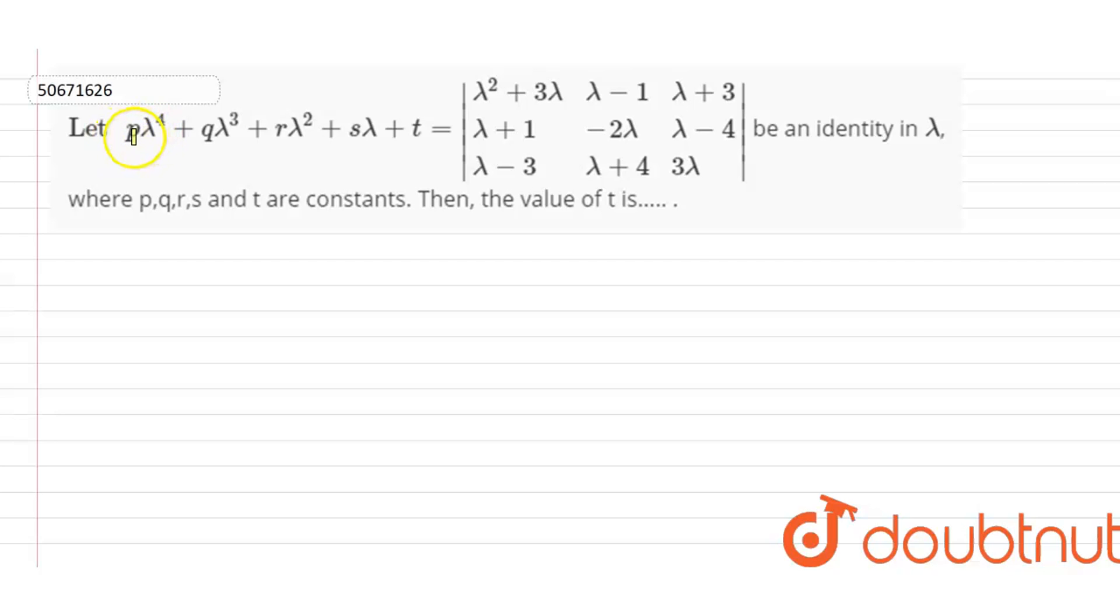Hi guys, my question is: let p𝜆⁴ + q𝜆³ + r𝜆² + s𝜆 + t equal the determinant |𝜆² + 3𝜆, 𝜆 - 1, 𝜆 + 3; 𝜆 + 1, -2𝜆, 𝜆 - 4; 𝜆 - 3, 𝜆 + 4, 3𝜆| be an identity in 𝜆 where p, q, r, s and t are constants. Then the value of t is?